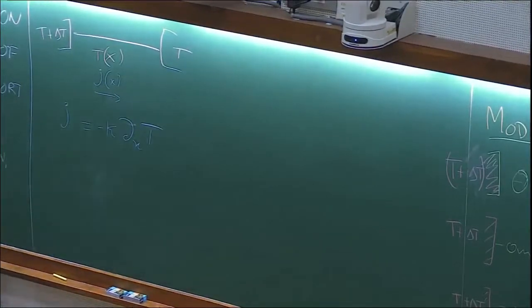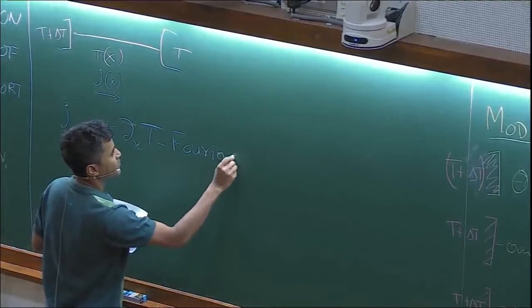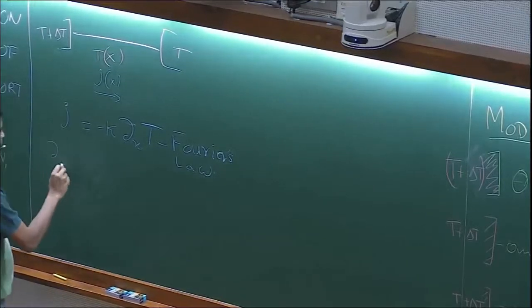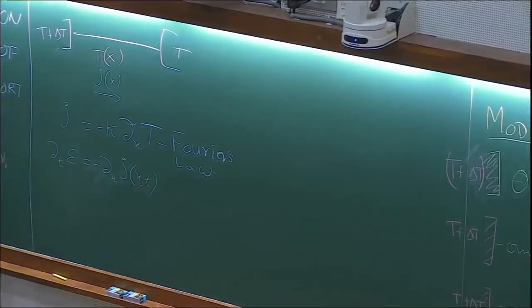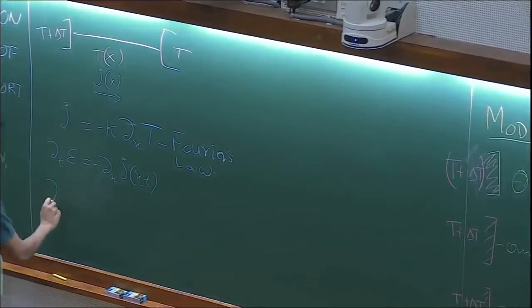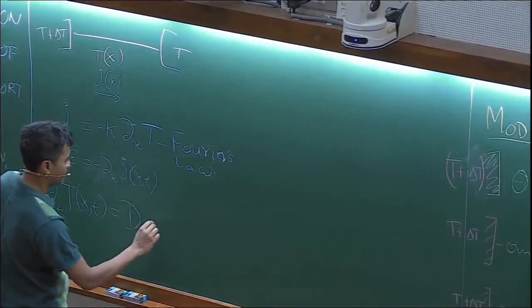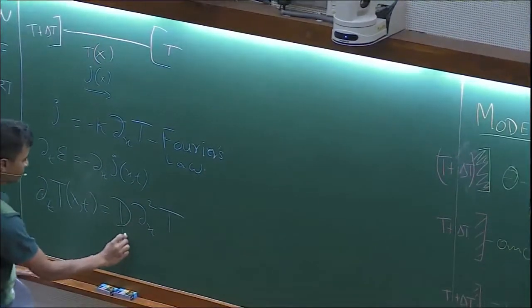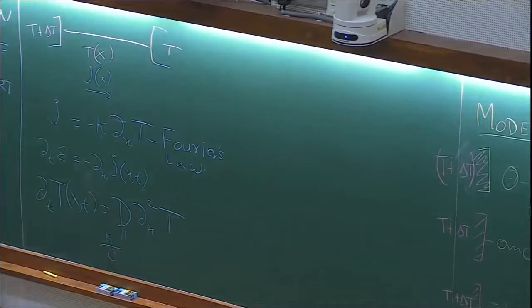We're just looking at 1D. This is Fourier's law. If you use the fact that energy is conserved, which means that energy density satisfies a continuity equation, then you get the heat diffusion equation where the diffusion constant is basically given by the thermal conductivity divided by specific heat.